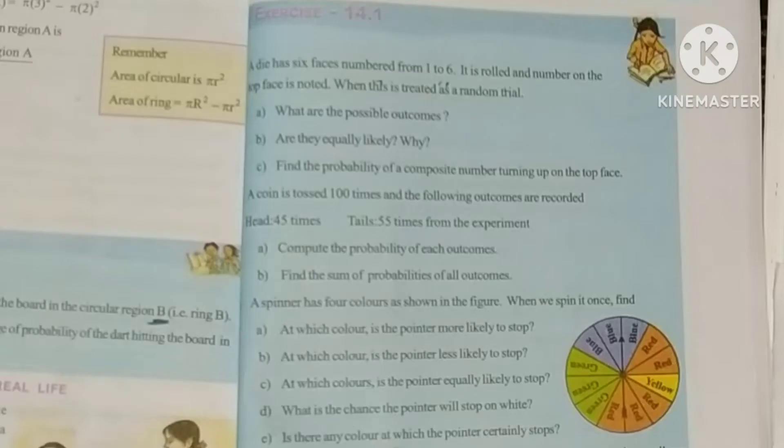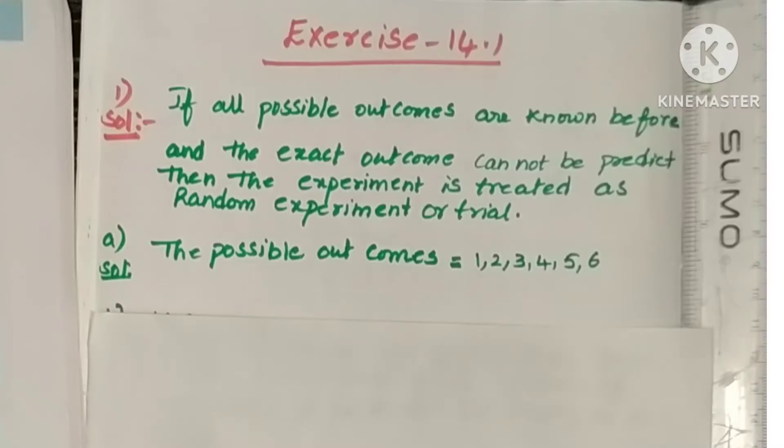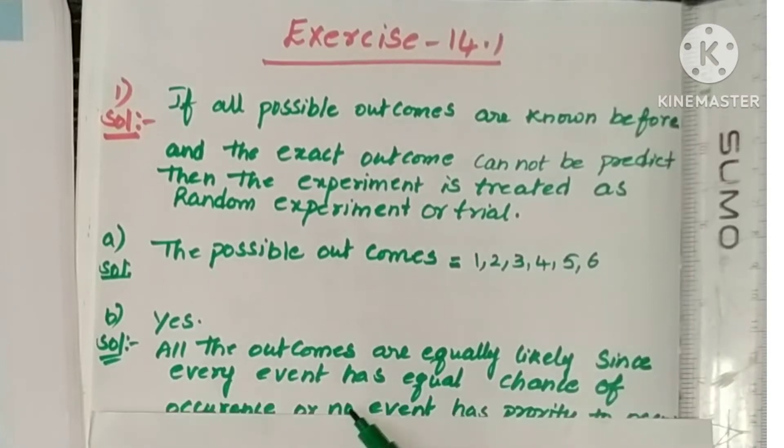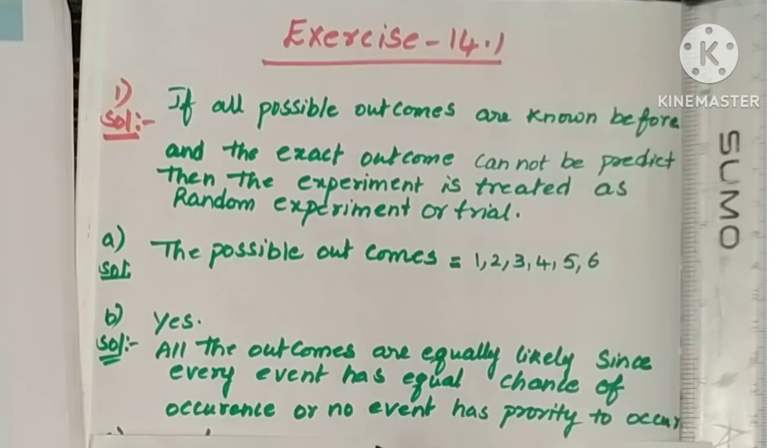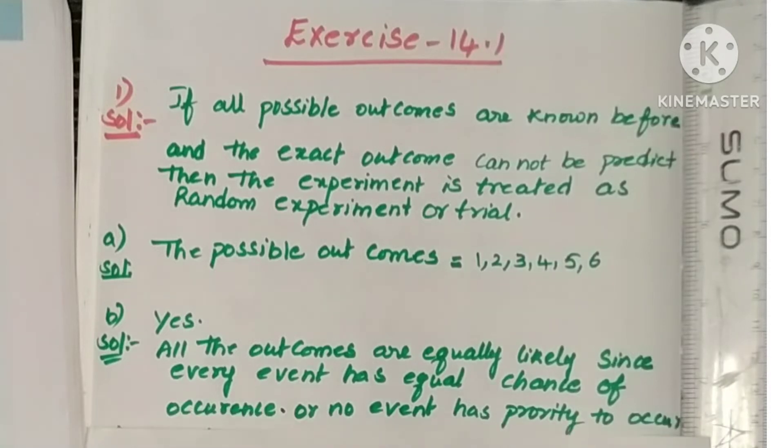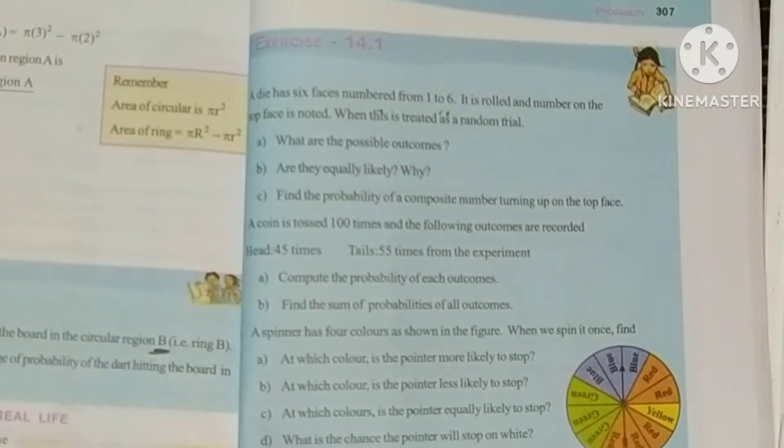Next, are they equally likely? Yes. These all are equally likely. Because each one has an equal chance. So the same we will write here: All the outcomes are equally likely since every event has equal chance of occurrence, or no event has priority to occur.